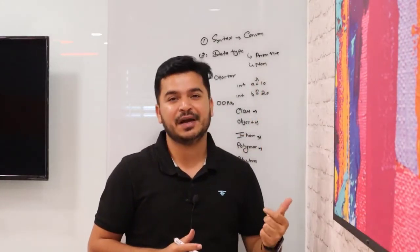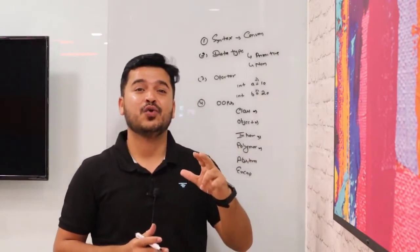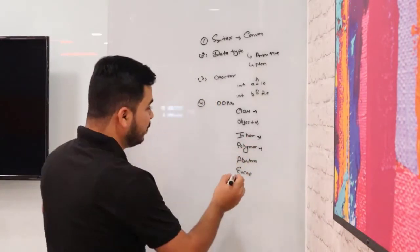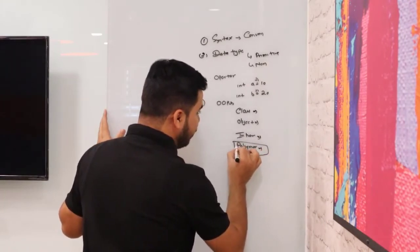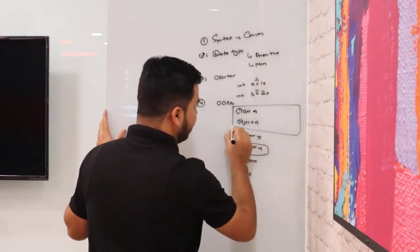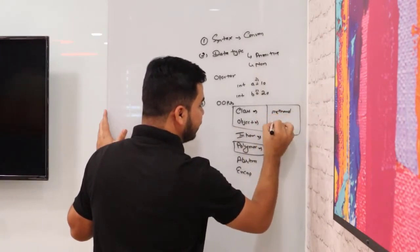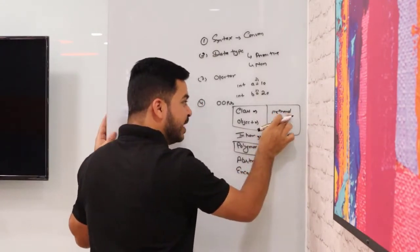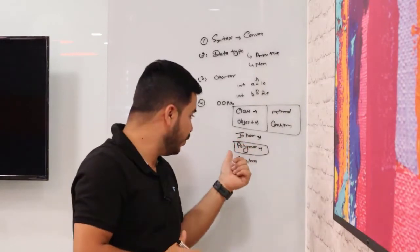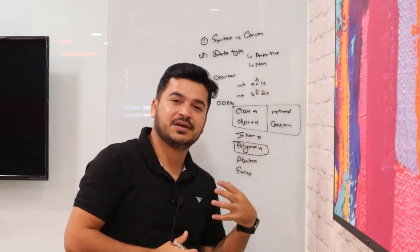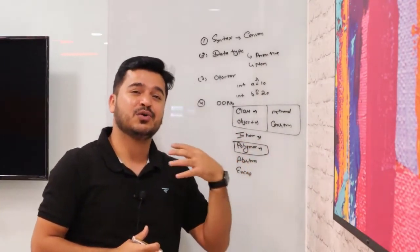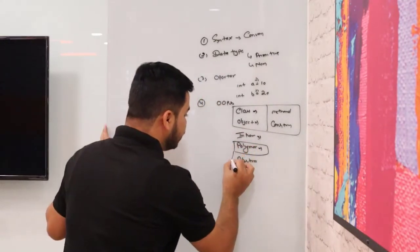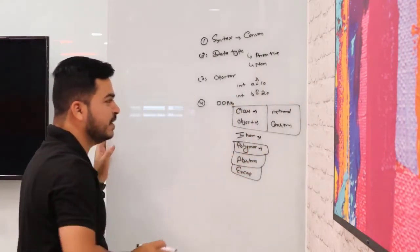In runtime polymorphism you will have method overriding, and in compile time you have method overloading and constructor overloading. Before you get to polymorphism, also understand what a method is and what a constructor is, how to pass parameters to methods and constructors, and how to return values. Then also cover abstraction and encapsulation. These are the basic OOP concepts you need to cover.